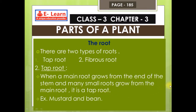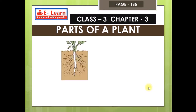For example, mustard and bean. If you see a mustard plant or bean plant from the ground, there will be a main root and small roots branching from it. You can see it in the picture — this is the stem, this is the main root, and these are the small roots. This is a tap root.